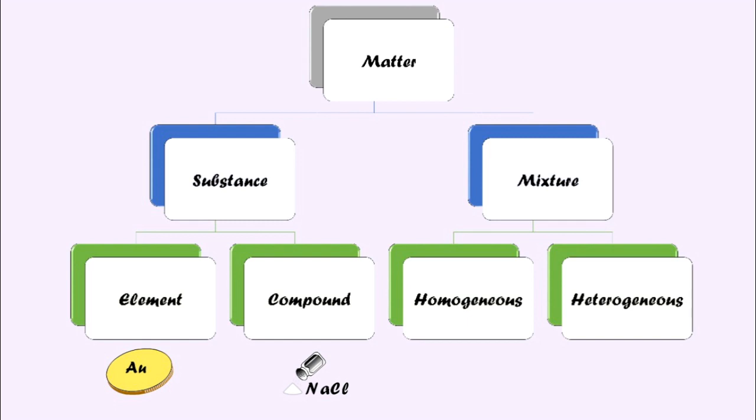Homogeneous mixtures have same composition throughout and the components are indistinguishable. For example, salt water. When salt is dissolved in water, it cannot be distinguished.